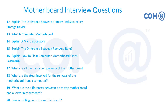Primary storage includes static RAM and dynamic RAM. Secondary storage includes hard disk, floppy disk, and CD-ROM. A computer motherboard is a single board that holds all components. A microprocessor is a chip that processes instructions from other components and provides output to output devices.